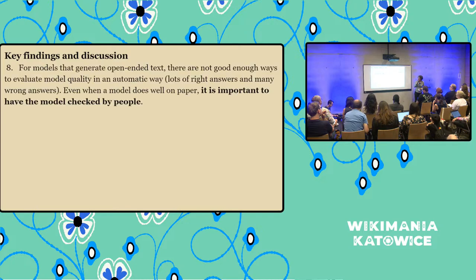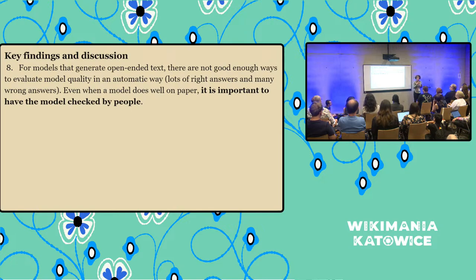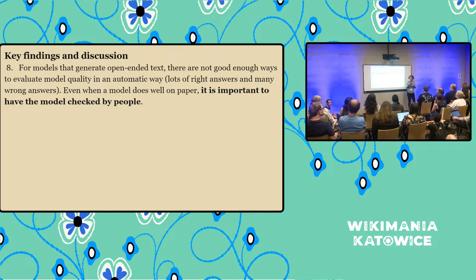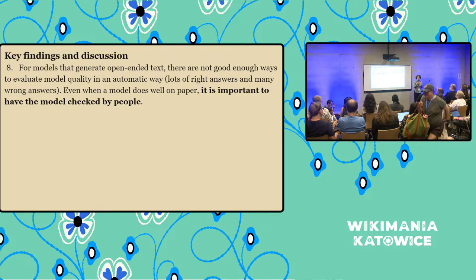Here are some of the things we learned. For models that generate open-ended text — which includes large language models or generative AI — there are not good enough ways to evaluate these models automatically. The model may look really good on paper, but once we try to bring it to Wikipedia and make it work there, we run into a problem: there are a lot of right answers and also a lot of wrong answers, but we don't have enough good data to automatically assess the quality of these models. We are concluding that we still need a human to check the results because sometimes it does amazingly well and sometimes it does miserably badly, and we haven't figured it out yet.